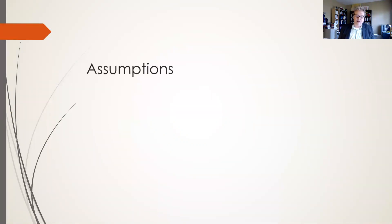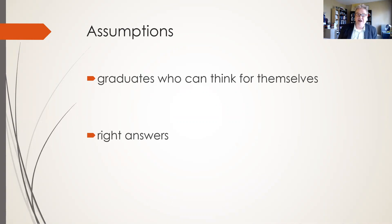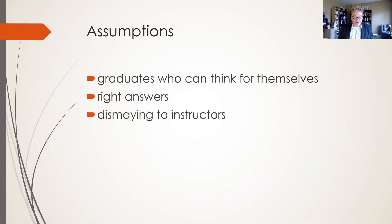The author outlines some assumptions about the aims of higher education. Higher education should give us graduates who can think for themselves on contemporary controversial issues. Many students come to college and expect to receive the right answers to questions that they can repeat back on tests. This is dismaying to instructors because many believe that higher education should be about students thinking for themselves.